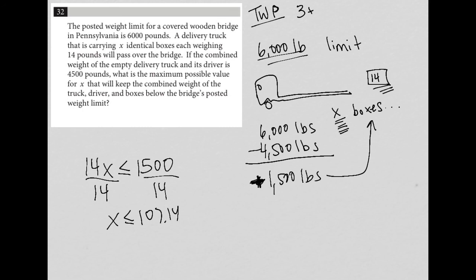Which means that if the question is asking for the maximum possible value of X, the maximum number of boxes is 107, because that will get me right below that 1,500 mark. So 107 is the best answer here based upon the information provided.